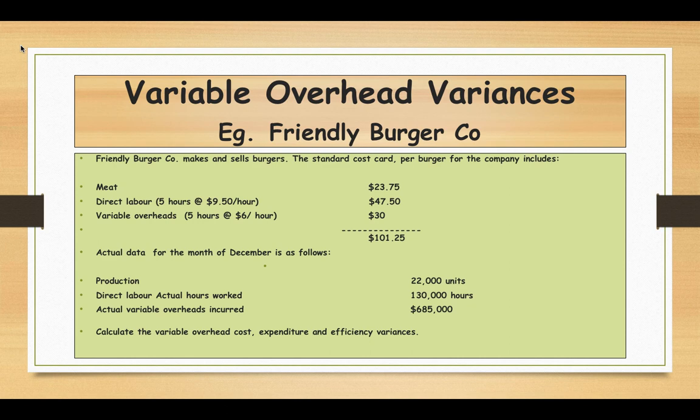The actual data for the month of December shows: production of 22,000 burgers; direct labor actual hours worked — 130,000 hours; actual variable overhead incurred — $685,000. We need to calculate the variable overhead cost variance, the expenditure variance, and the efficiency variance, since variable overhead varies with hours in this example.